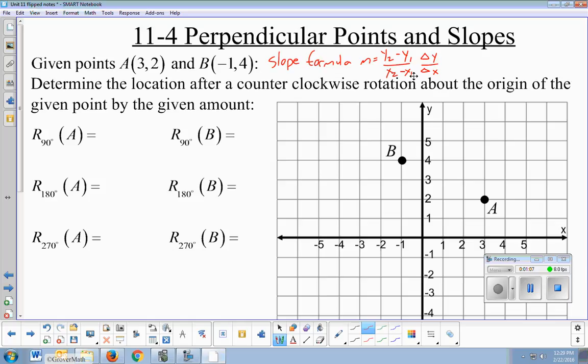So triangle y means change in y, and triangle x is change in x. The change in the y over the change in x, that's your slope formula. And we use a lowercase m for the variable slope, like y equals mx plus b.